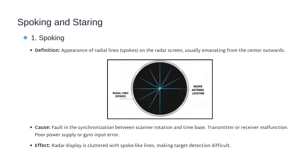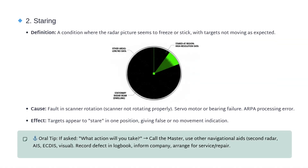Let's move on to common radar errors: spoking and staring. Spoking looks like radial spokes coming out from the center of the radar screen, usually caused by synchronization faults, transmitter or receiver malfunction, or a poor power supply — making target detection very difficult. Staring means the radar picture freezes and targets don't move as expected, which can happen if the scanner isn't rotating properly due to servo motor or bearing failure, or an ARPA processing error — causing targets to appear stuck or show false movement. Oral tip: If this happens, call the master, switch to other navigational aids like AIS, ECDIS, or a second radar, record the defect in the logbook, inform the company, and arrange for repair.